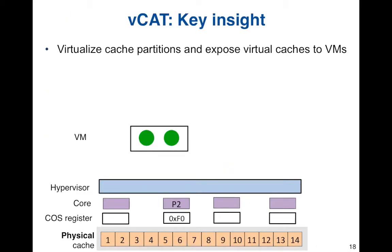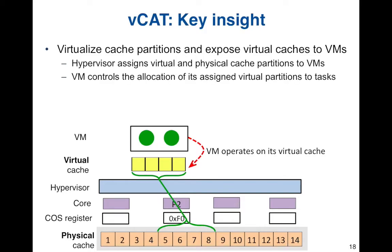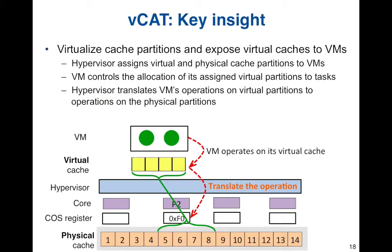To allow dynamic cache management without breaking the virtualization abstraction, we propose to virtualize the cache partitions and expose virtual caches to VMs. In this example, each VM will have a virtual cache. The hypervisor will specify the physical cache partitions to the VM by linking the virtual cache to specific physical cache. When the VM controls the cache partitions for its tasks, the VM will operate on the virtual cache. This operation will be trapped into the hypervisor and translated to the operation on the physical cache partitions.